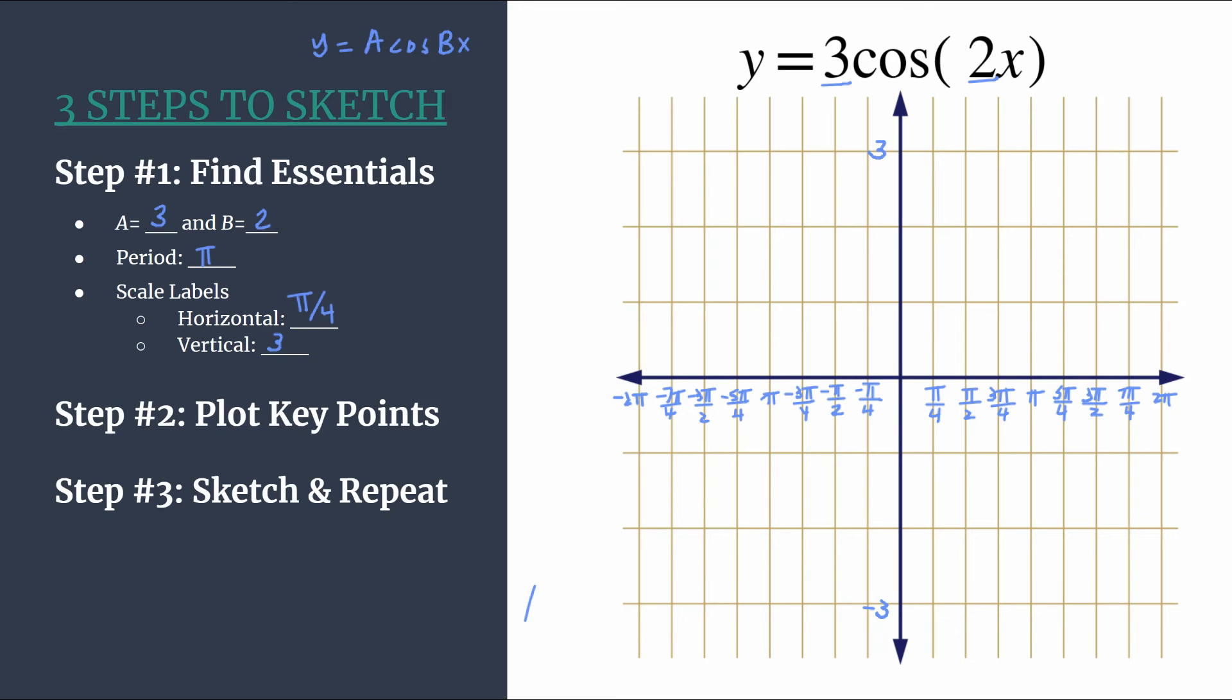So we are all set up. Let's move to step two. We're going to plot our key points. So in a regular cosine graph, so this has not been reflected, again it's not shifted in any way, our pattern is maximum, 0, minimum, 0.